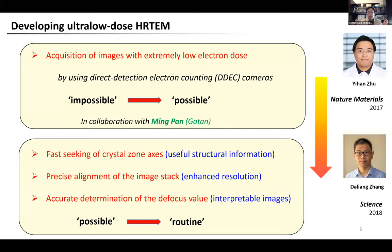This situation is just like taking a photo in a dark room where, because light illumination is limited, we cannot see much in the picture. To solve this problem, we had to develop new imaging methods, which we call ultra-low-dose HRTEM. We solved this problem in two steps.